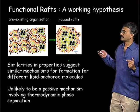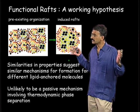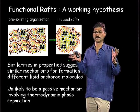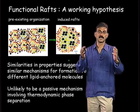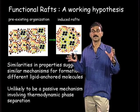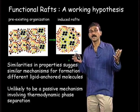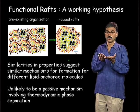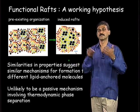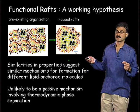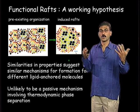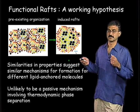The similarities in properties between all these different lipid-anchored molecules suggest similar mechanisms for the formation of clusters of GPI-anchored proteins, RAS proteins, and glycolipids. It is unlikely that a passive mechanism involving thermodynamic phase separation accounts for these structures. Instead, we may need a new proposal for understanding the formation of these complexes in cell membranes — a new proposal for the structure of the membrane — which part three will explore.